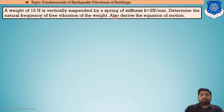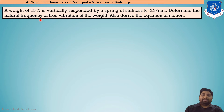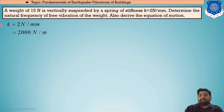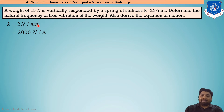It has also been asked to derive the equation of motion, so the numerical is divided into two parts. Part 1: find the natural frequency, f = 1/(2π) × √(k/m). Since k is given as 2 Newton per mm, converting to Newton per meter gives k = 2000 N/m.